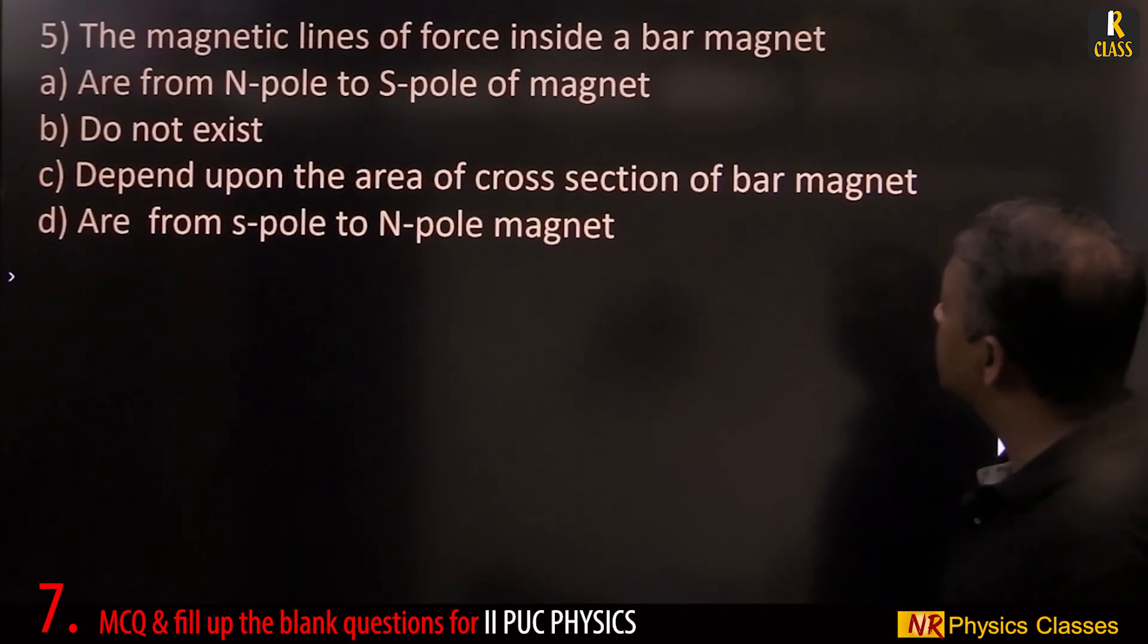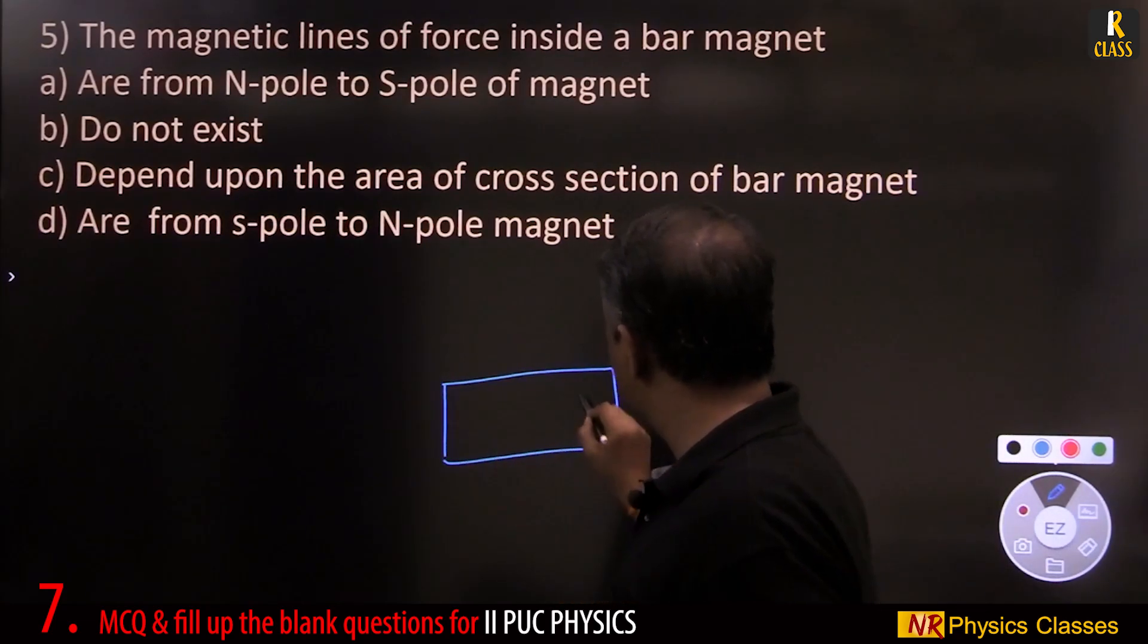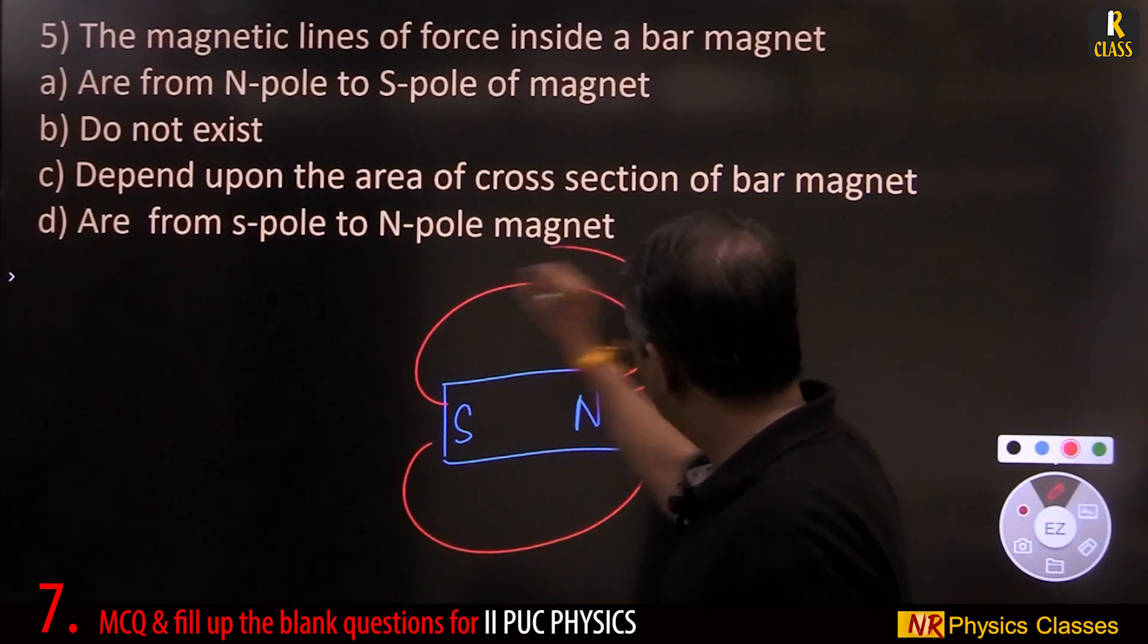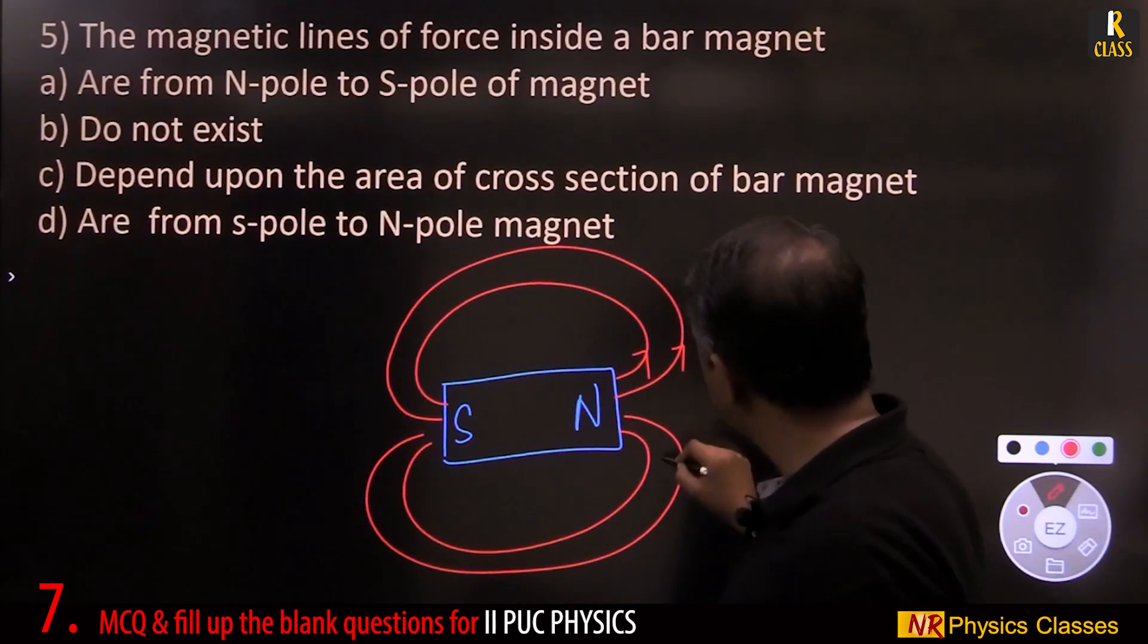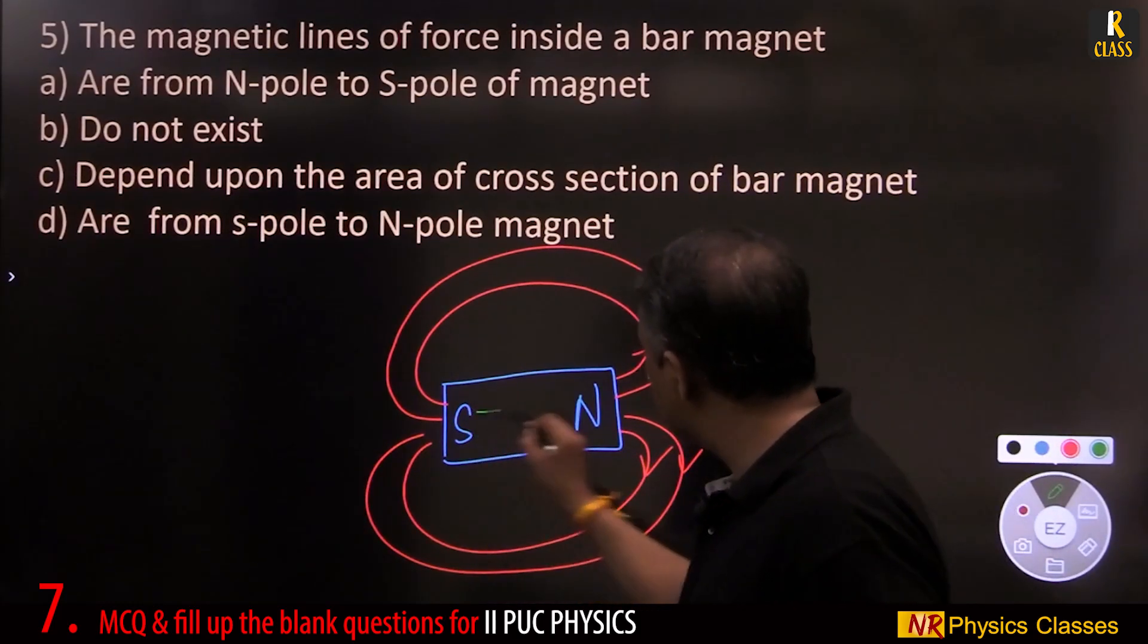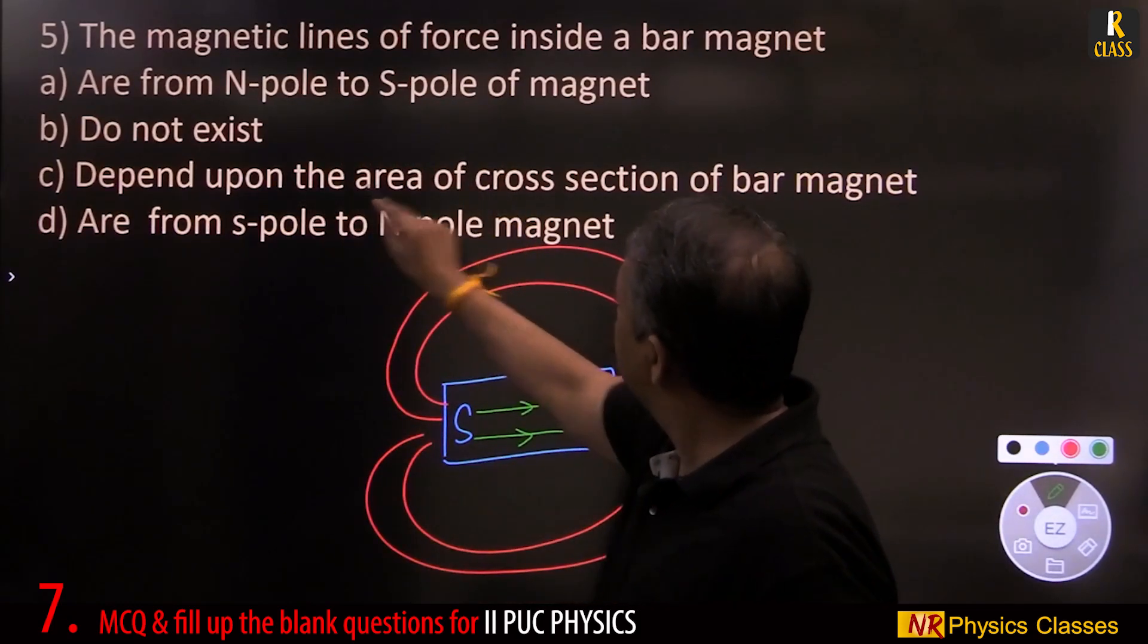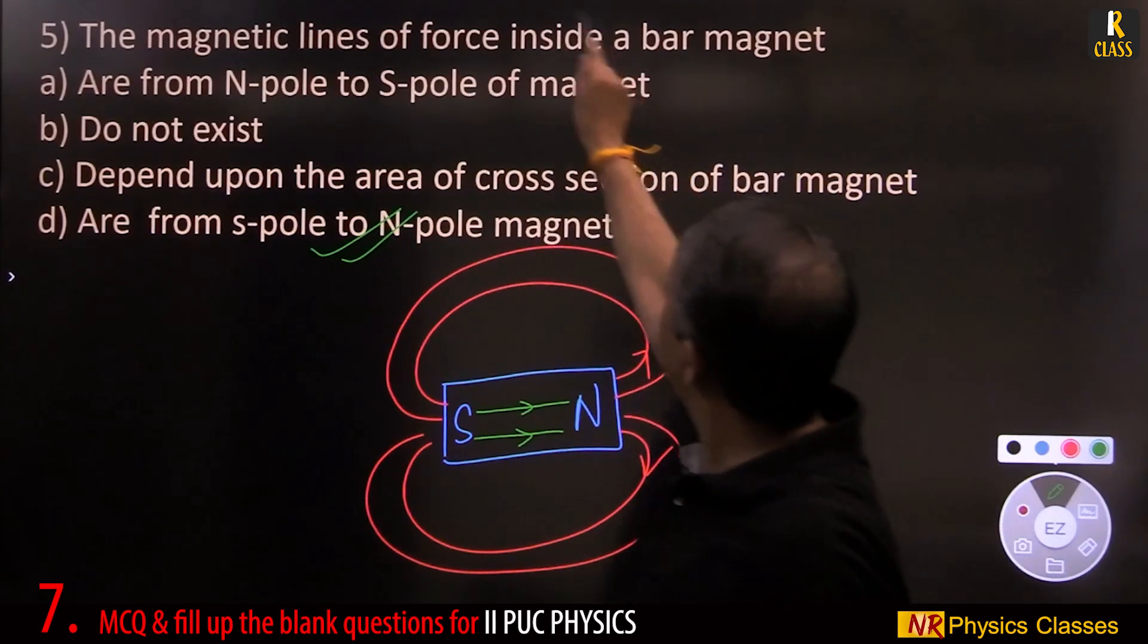The magnetic lines of force inside a bar magnet. This is a bar magnet, north pole, south pole. Lines of forces are from north to south like this, north to south. But inside the bar magnet, it is from south to north.